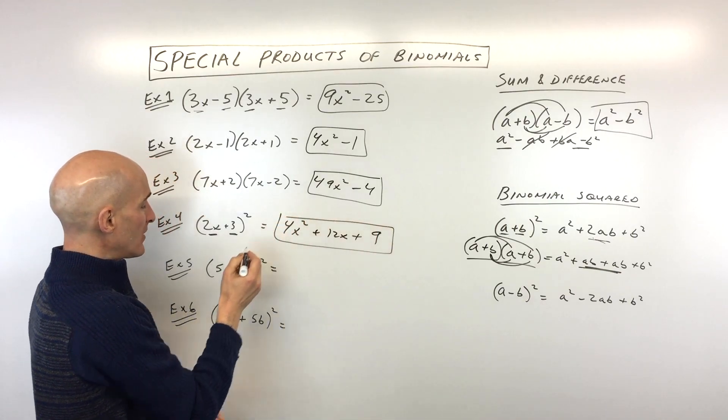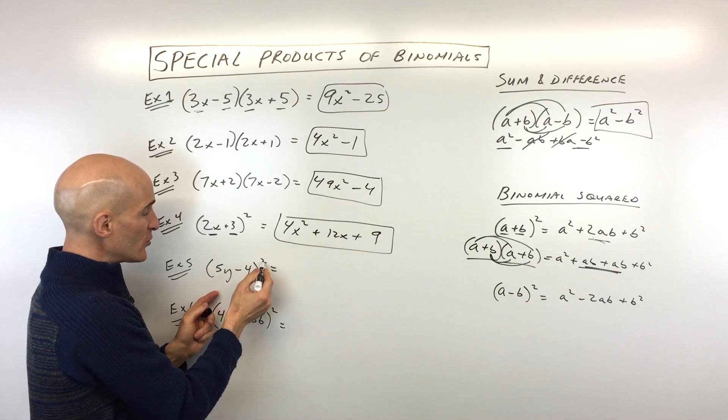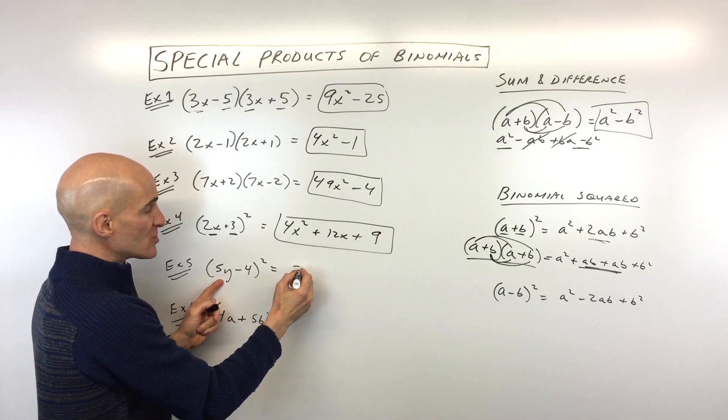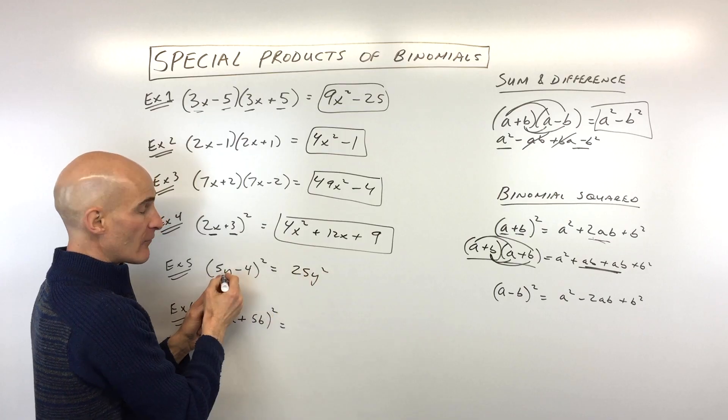Let's try another one. This one you're subtracting. So same pattern. You can see it's a binomial squared. We've got 5y squared, which is 25y squared, 5y times 5y.